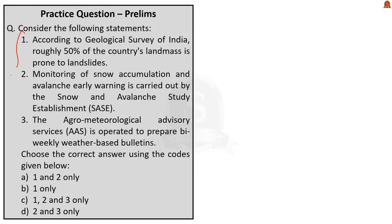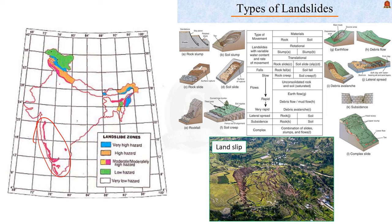The next question gives three statements; the correct answer is Option D — two and three only, since the first statement is incorrect. The first statement says according to the Geological Survey of India, roughly 50% of the country's landmass is prone to landslides — this is an extreme statement. According to the survey, only 15% of the country's region is prone to landslides. The two high-vulnerability regions are the Himalayas of northwest and northeast India, and the Western Ghats.